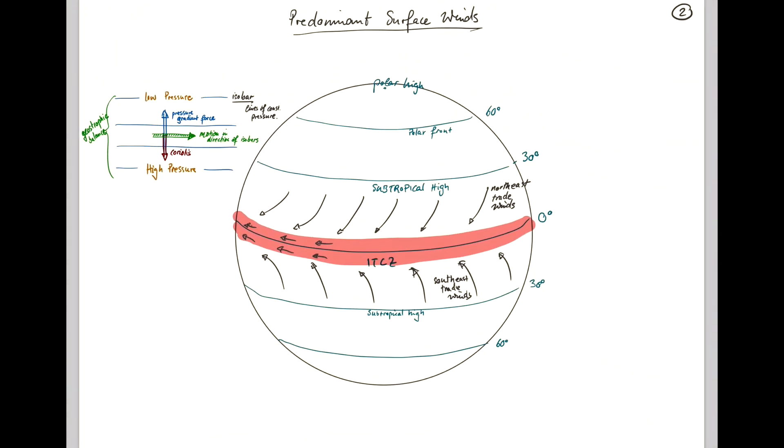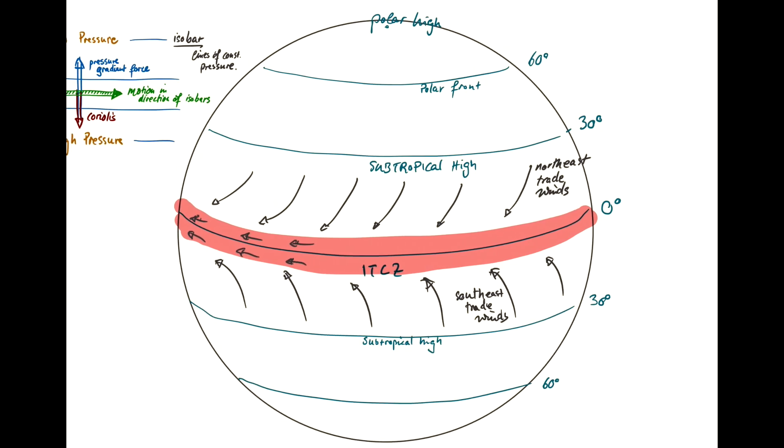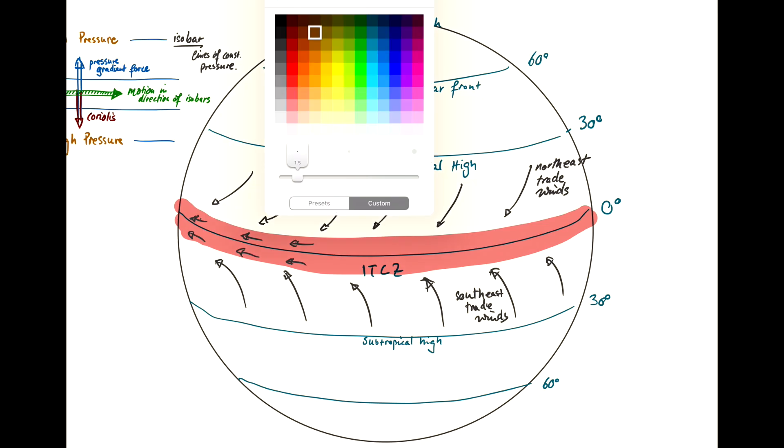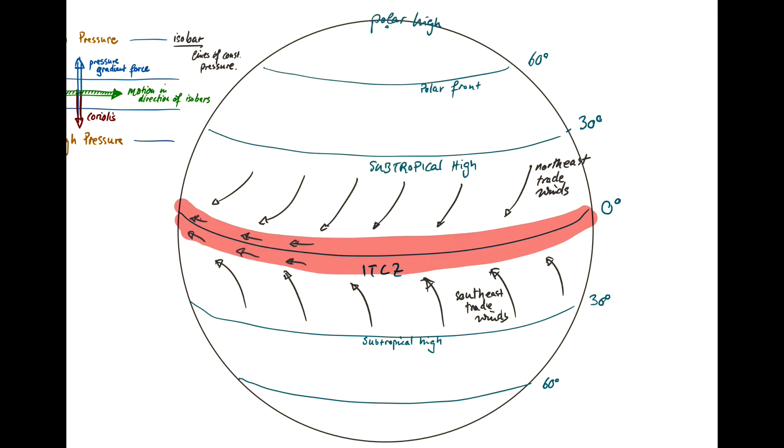All right, so to get back to our global wind picture, we have the trade winds in the subtropics. And then, as you know, for the Ferrel cell at the surface, the wind is in the northward direction. And that gets deflected again to the right due to Coriolis. So then you're left with these westerlies. And you can see those westerlies in both hemispheres.